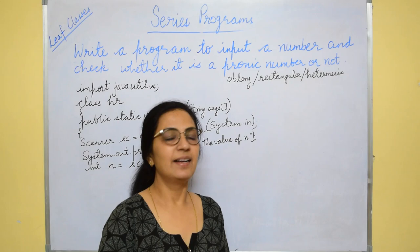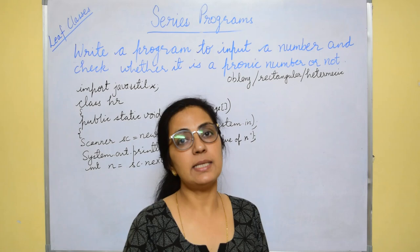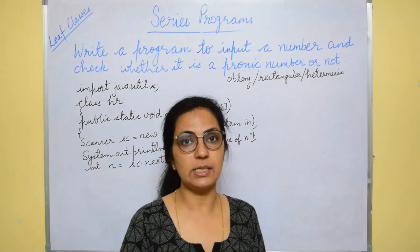The next question says to input a number and check whether it is a pranic number or not. The definition of pranic number says that a number is said to be pranic if it is the product of consecutive two integers.